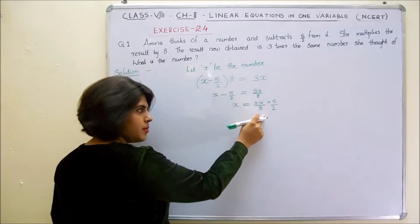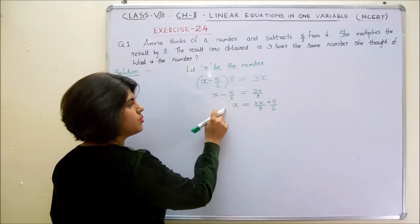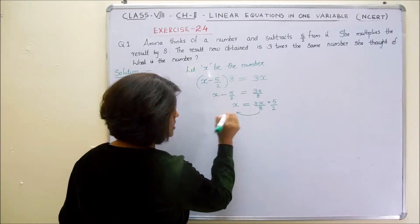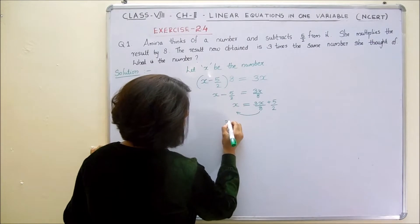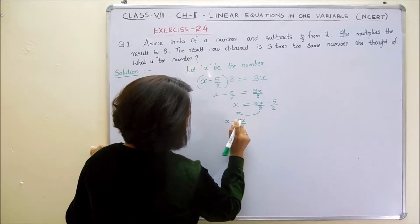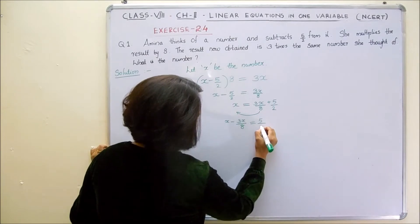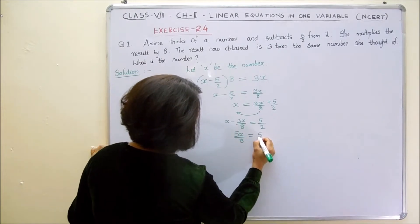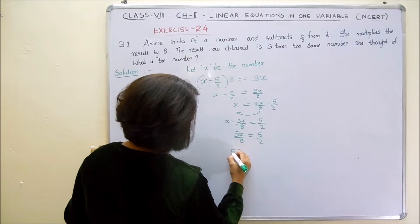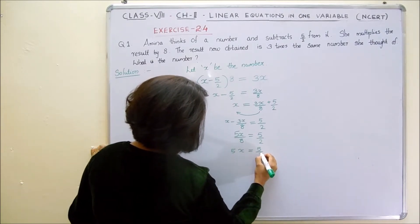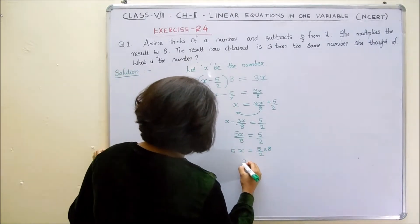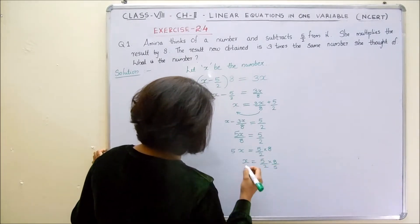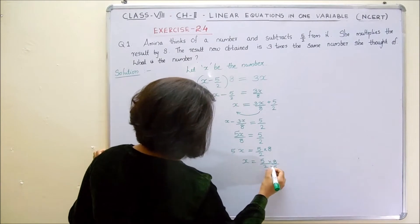Now our aim is to bring 3x by 8 to the other side. We have to keep only the variable on one side. So it would become x minus 3x by 8 which is equal to 5 by 2. Then it would be 8x minus 3x by 8, which is equal to 5 by 2. Then 5x equals 5 by 2 into 8 by transpose method.